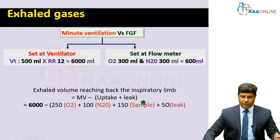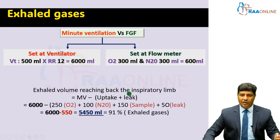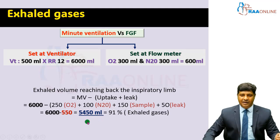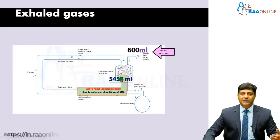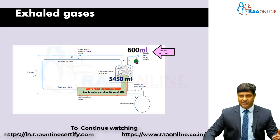For ETCO2 sampling, if you do not have a method to reintroduce the sampling gas back into the system, assuming the sampling loss is about 150 ml and a leak of about 50 ml, the total loss is 550 ml, which is taken away from the minute volume. So, 6000 minus 550 equals 5450 ml — this is the amount that enters the patient's inspiratory limb again. If the minute ventilation is about 6 liters, the fresh gas flow we set is going to be around 600 ml.